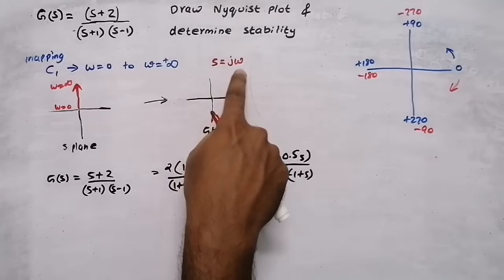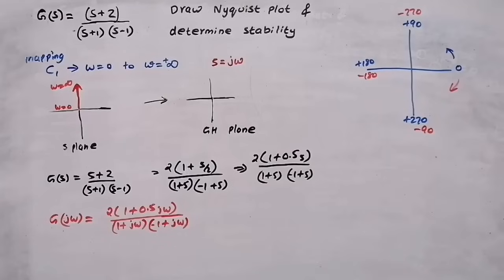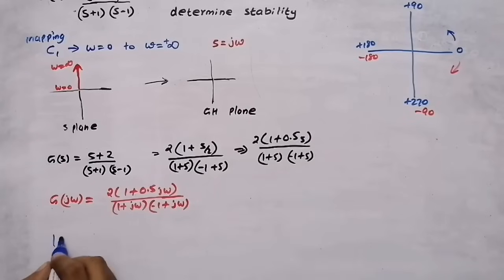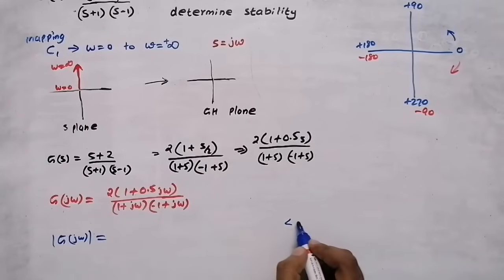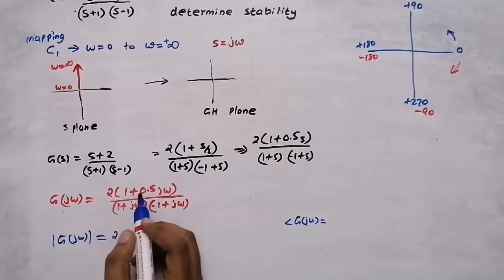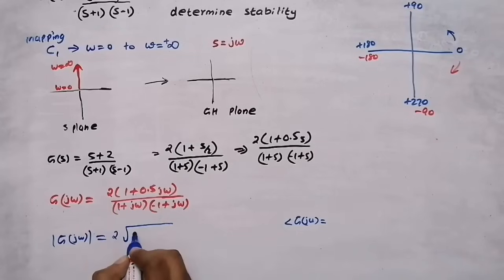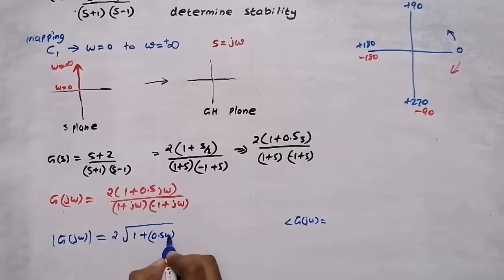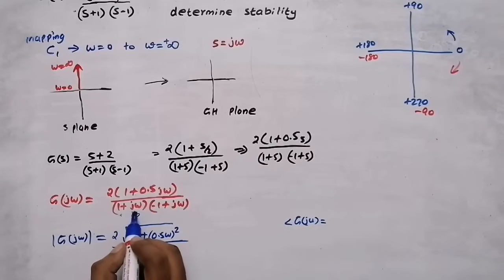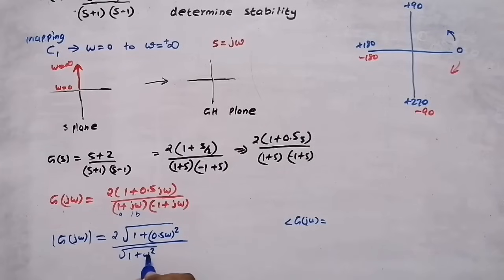Replace S with j omega. The magnitude of G(j omega) is: numerator 2 times root of (1 plus (0.5 omega) squared), divided by denominator root of (1 plus omega squared) times root of (1 plus omega squared). The angle of G(j omega) is tan inverse (0.5 omega) for the numerator term, minus tan inverse (omega) for the first denominator, minus the angle for the second denominator term.